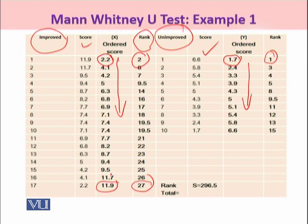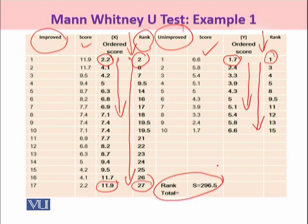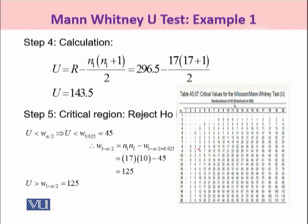Once you are done with that students, you have to take the ranks and sum up. This is the minimum rank sum, which you call R, calculated as 296.5. You summed the ranks of both data sets and chose the smallest. That is your criterion.